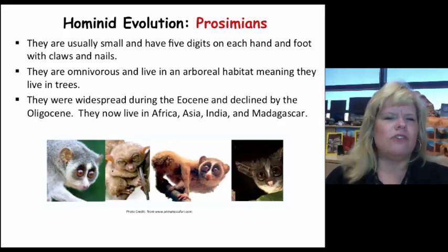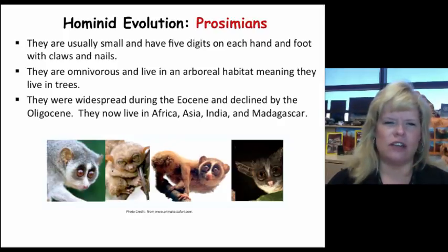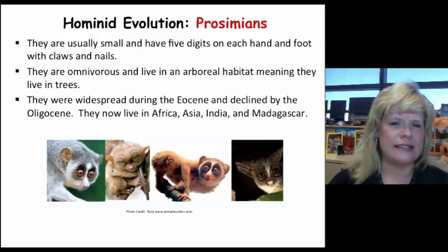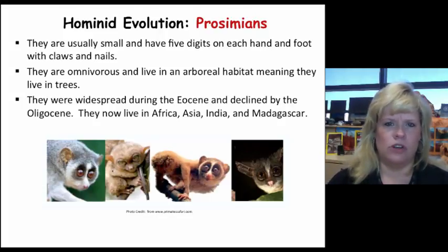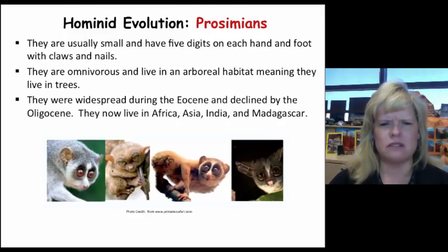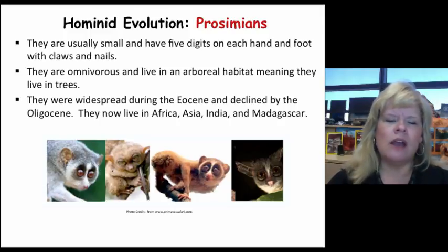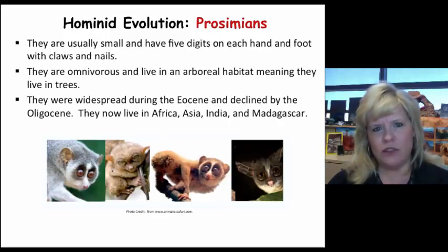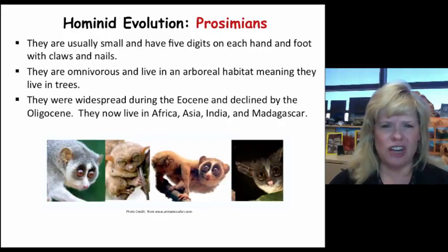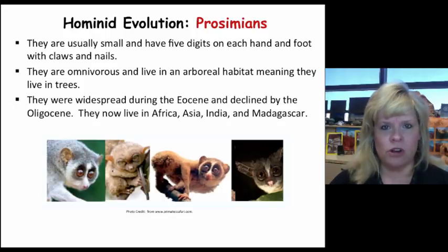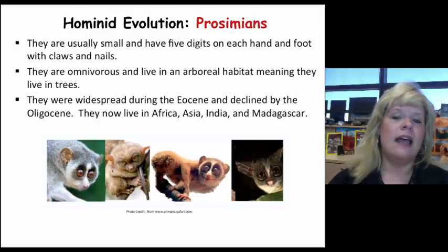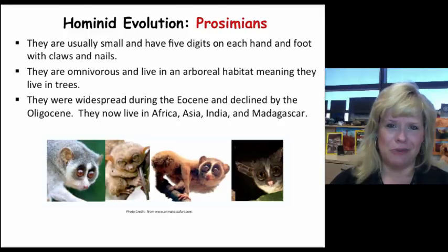Prosimians are small, with five digits on each hand and foot, claws and nails, and they eat both plants and meat — making them omnivores. They live in trees — they're arboreal — which is even a problem today when we think about extinctions and endangered species. These animals appeared widespread by the Eocene; we started getting primates back in the Paleocene — test question for sure. They declined in significant numbers during the Oligocene due to substantial changes with plate movements, which changed the tropical and subtropical tree environment where they lived.